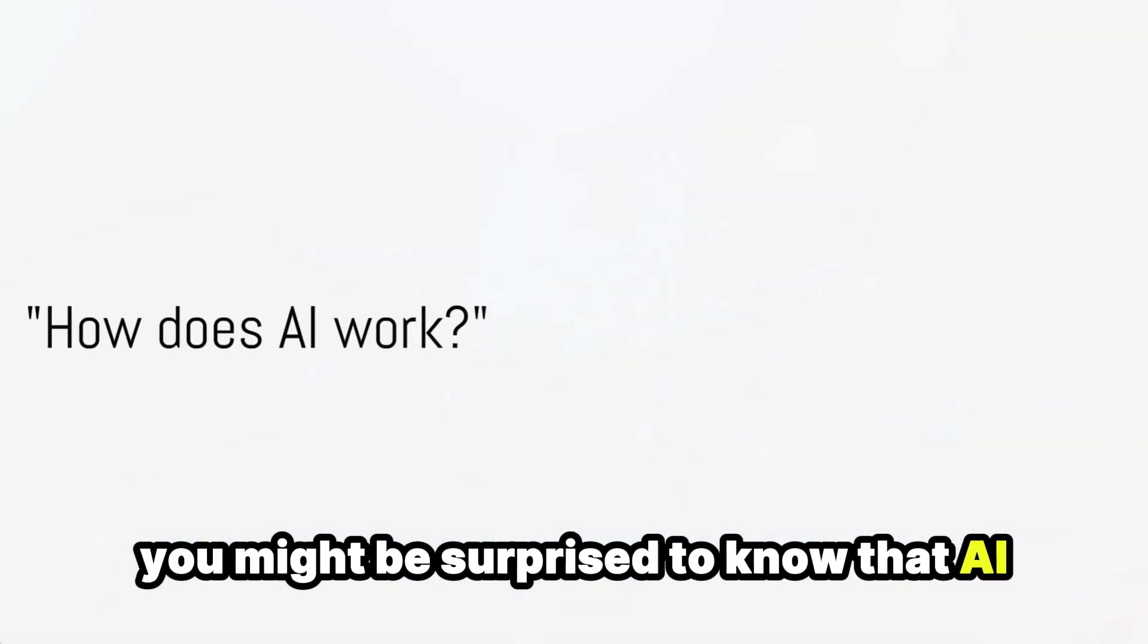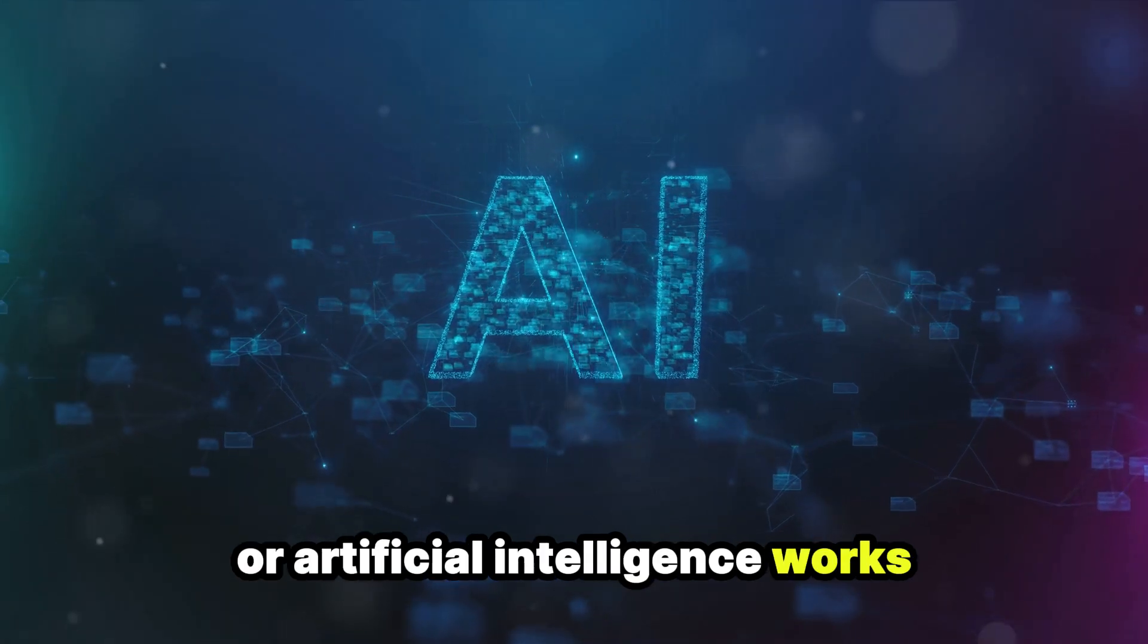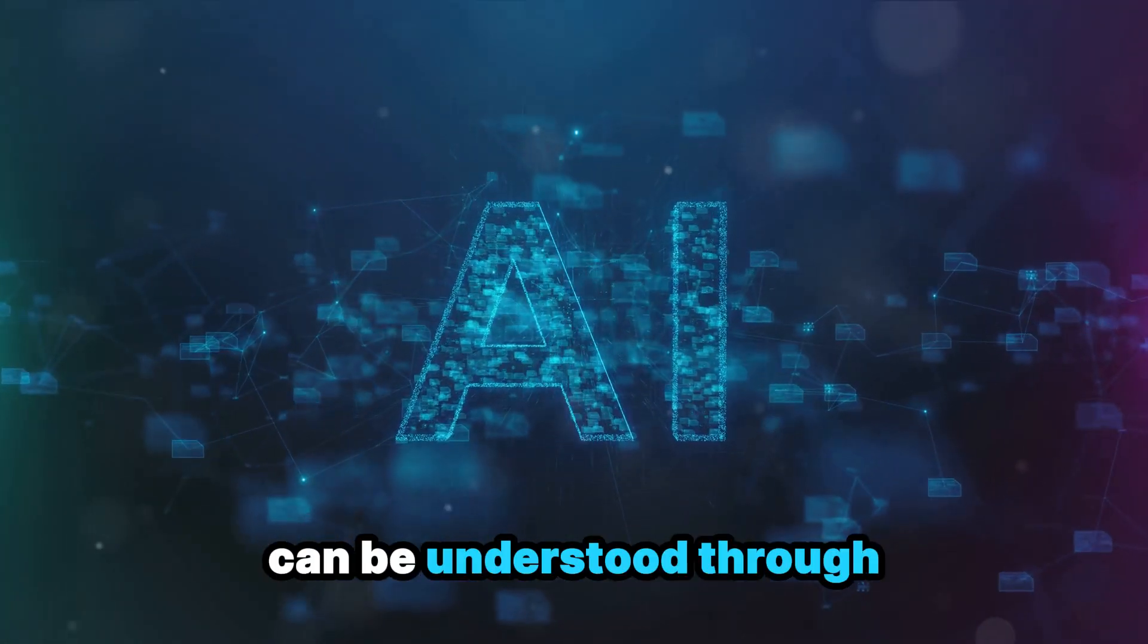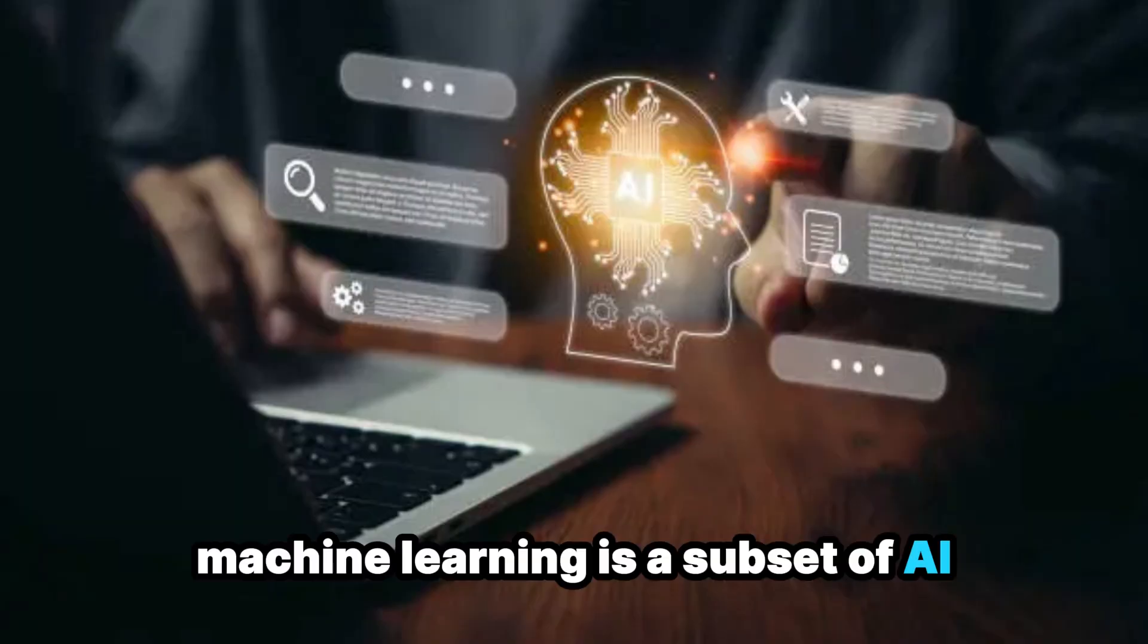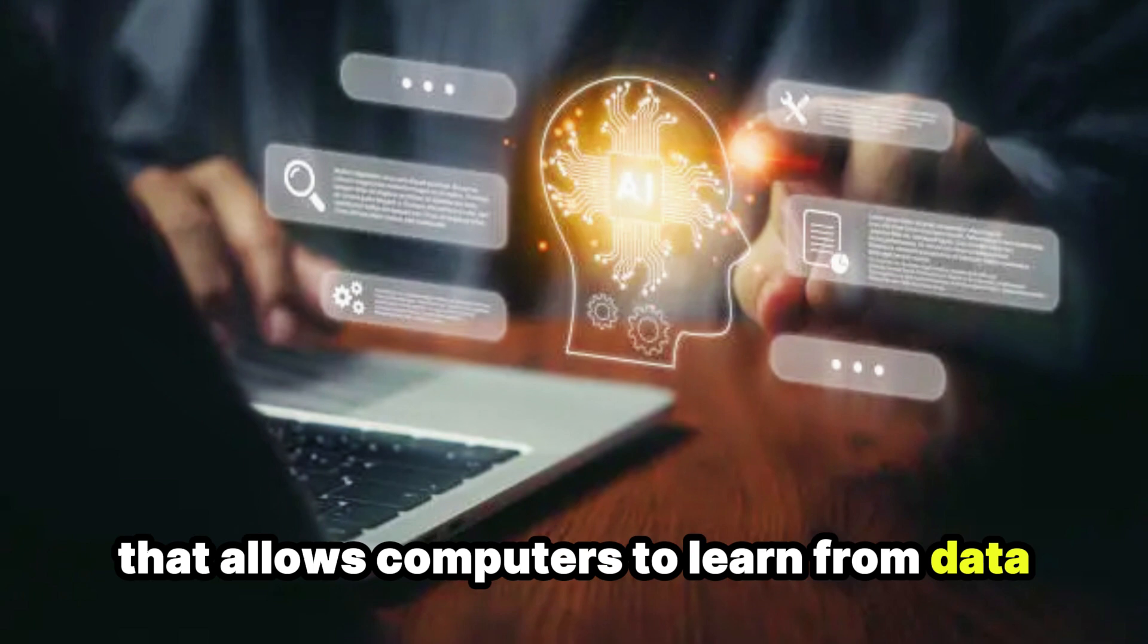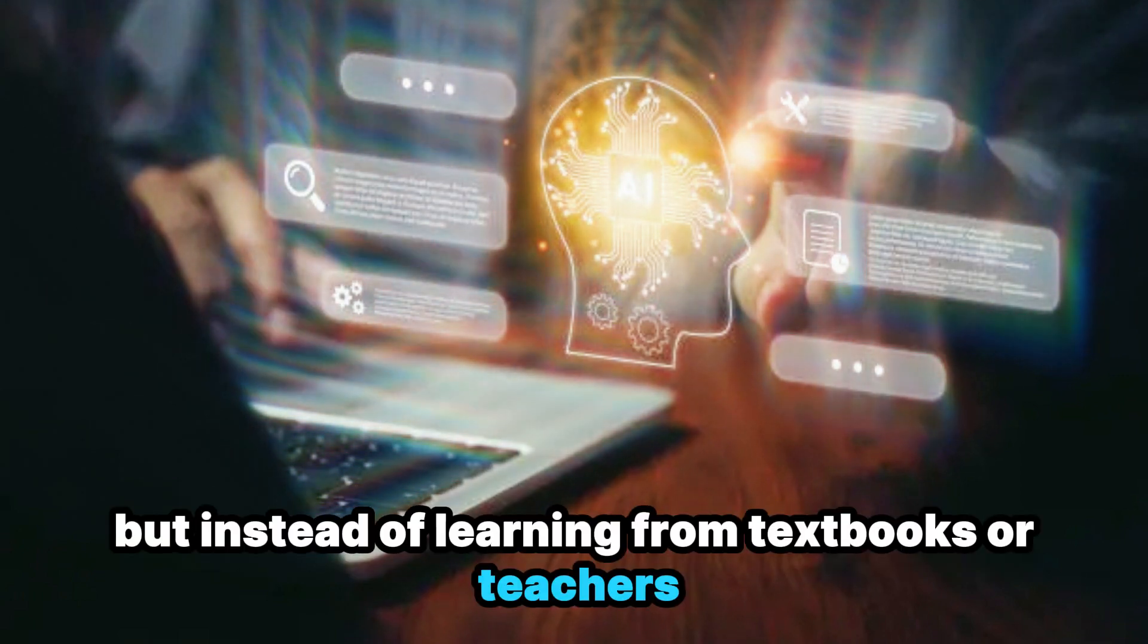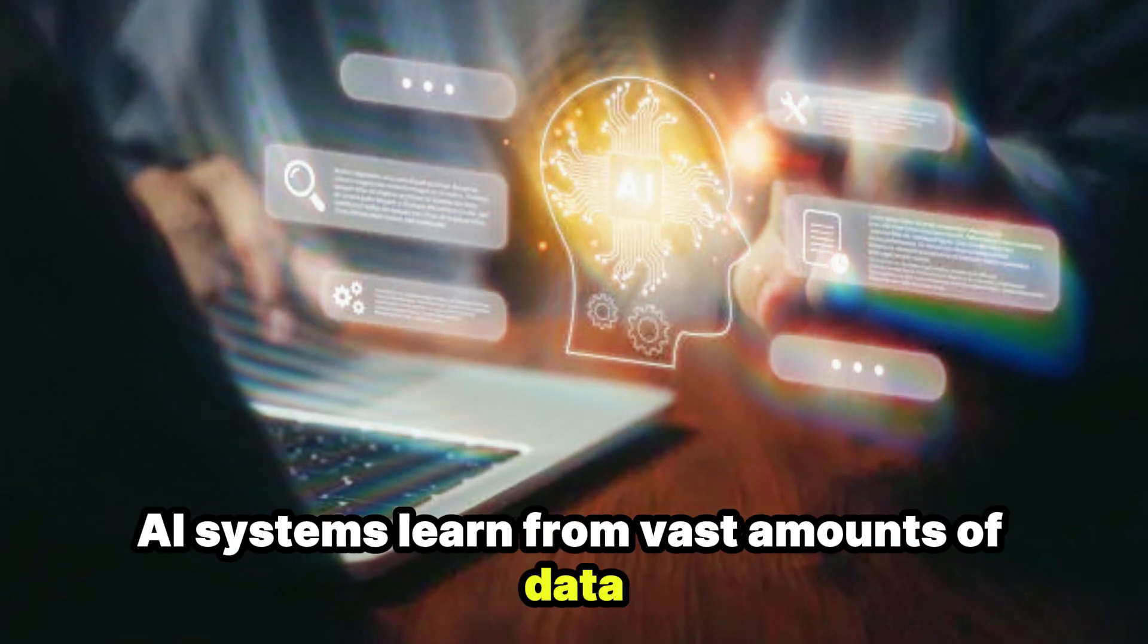You might be surprised to know that AI is closer to you than you think. Now let's dive into how AI or artificial intelligence works. The basic workings of AI can be understood through the concept of machine learning. Machine learning is a subset of AI that allows computers to learn from data, much like how we humans learn from experience. But instead of learning from textbooks or teachers, AI systems learn from vast amounts of data.